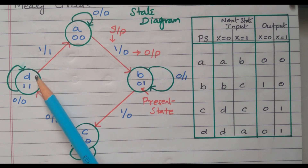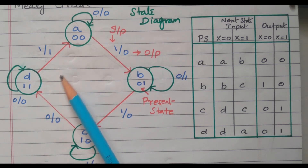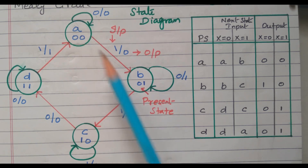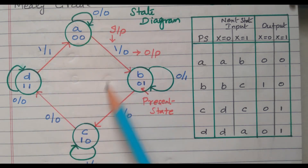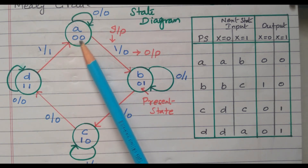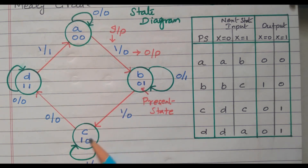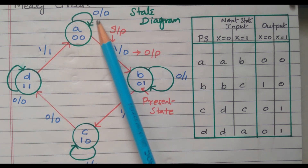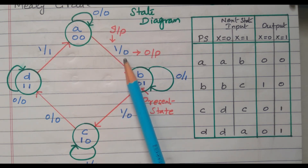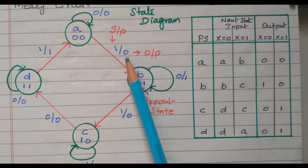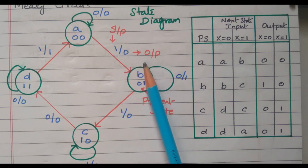The state diagram contains: input, output, present state, and next state. On the directed lines, the first number represents the input and the second number represents the output, separated by a slash. So input equals 0 or input equals 1, and similarly for each state, we determine what the output is when x equals 0 and when x equals 1.